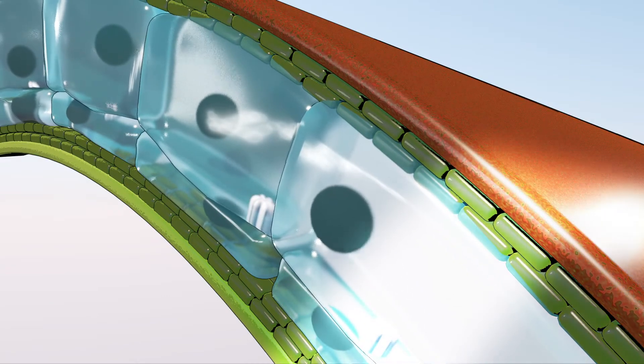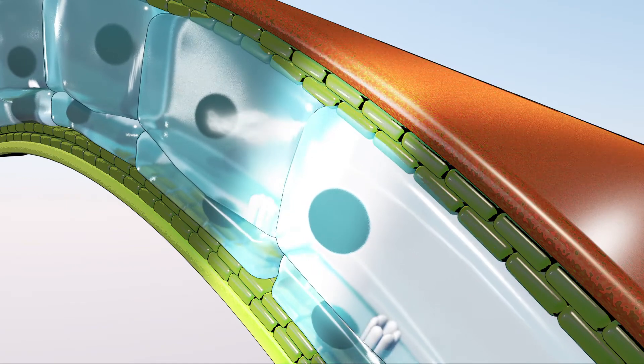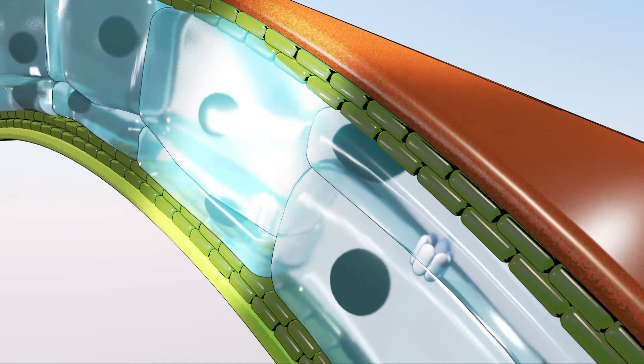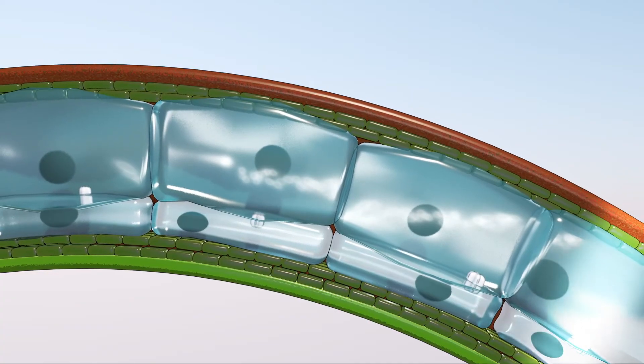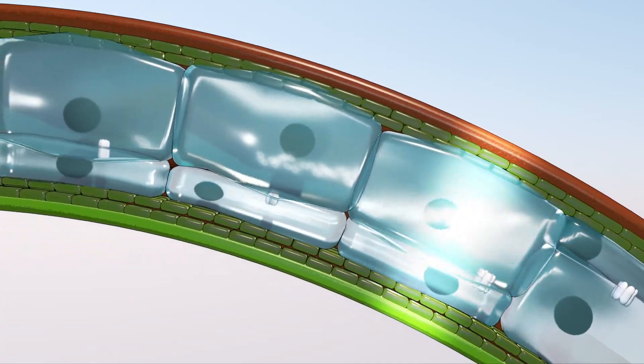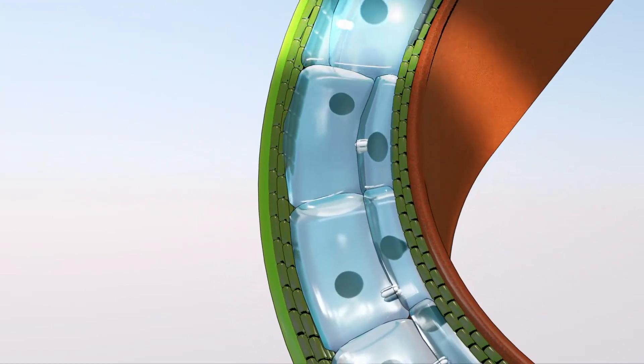When triggered by the second touch, the aquaporins open, allowing water to rush between the two cell layers. Cells in the inner layer rapidly lose water, releasing elastic energy causing them to shrink, while the cells in the outer layer take up this water and expand.